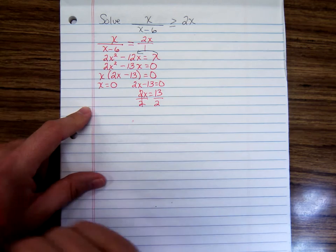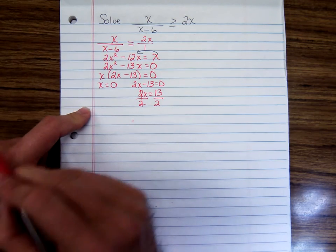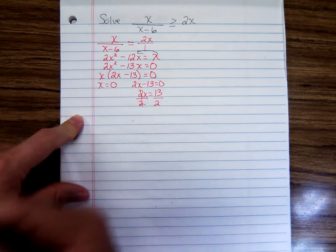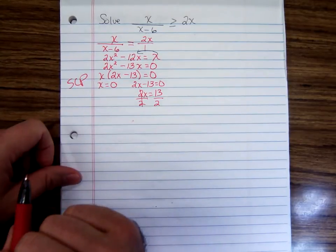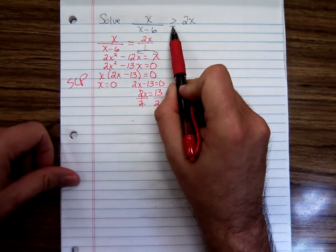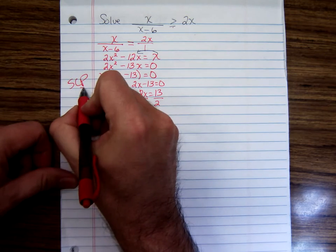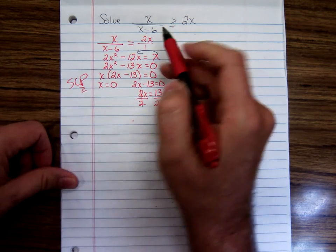These numbers here are our solution cut points. So I'll just say SCP. Remember, for solution cut points, you look up here to decide if it's an open or closed circle. Since there's an equal sign, it's a closed circle.